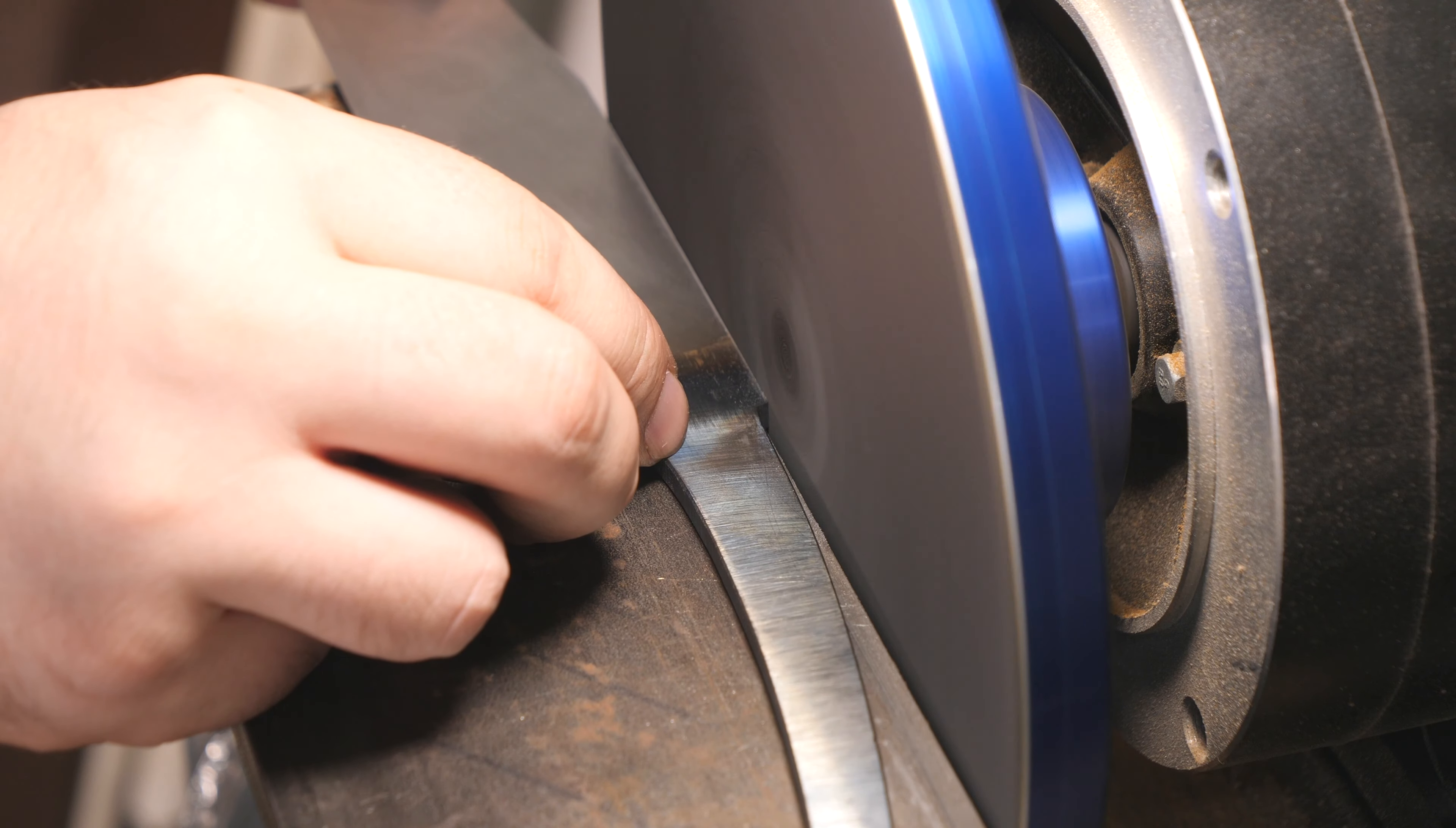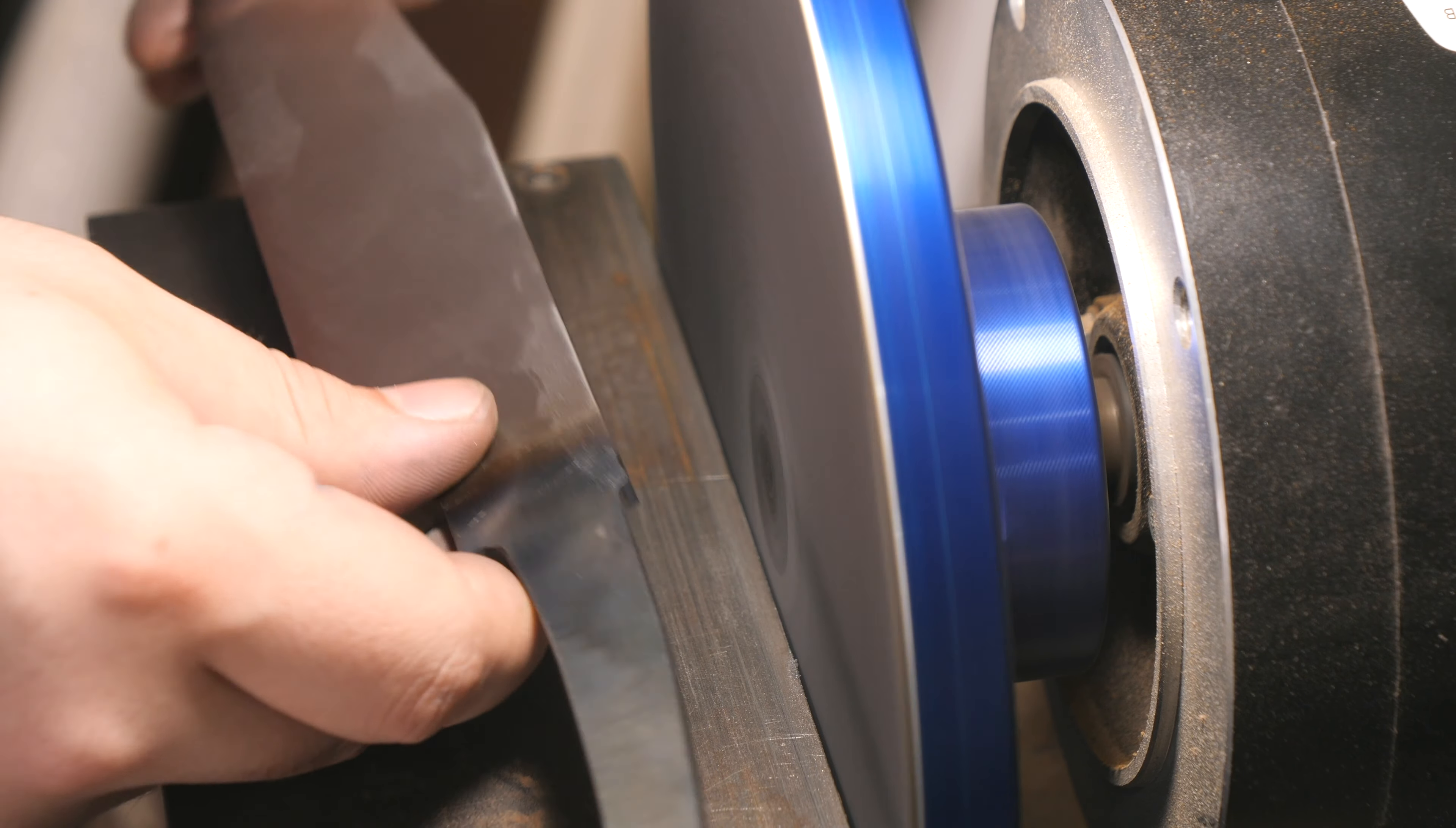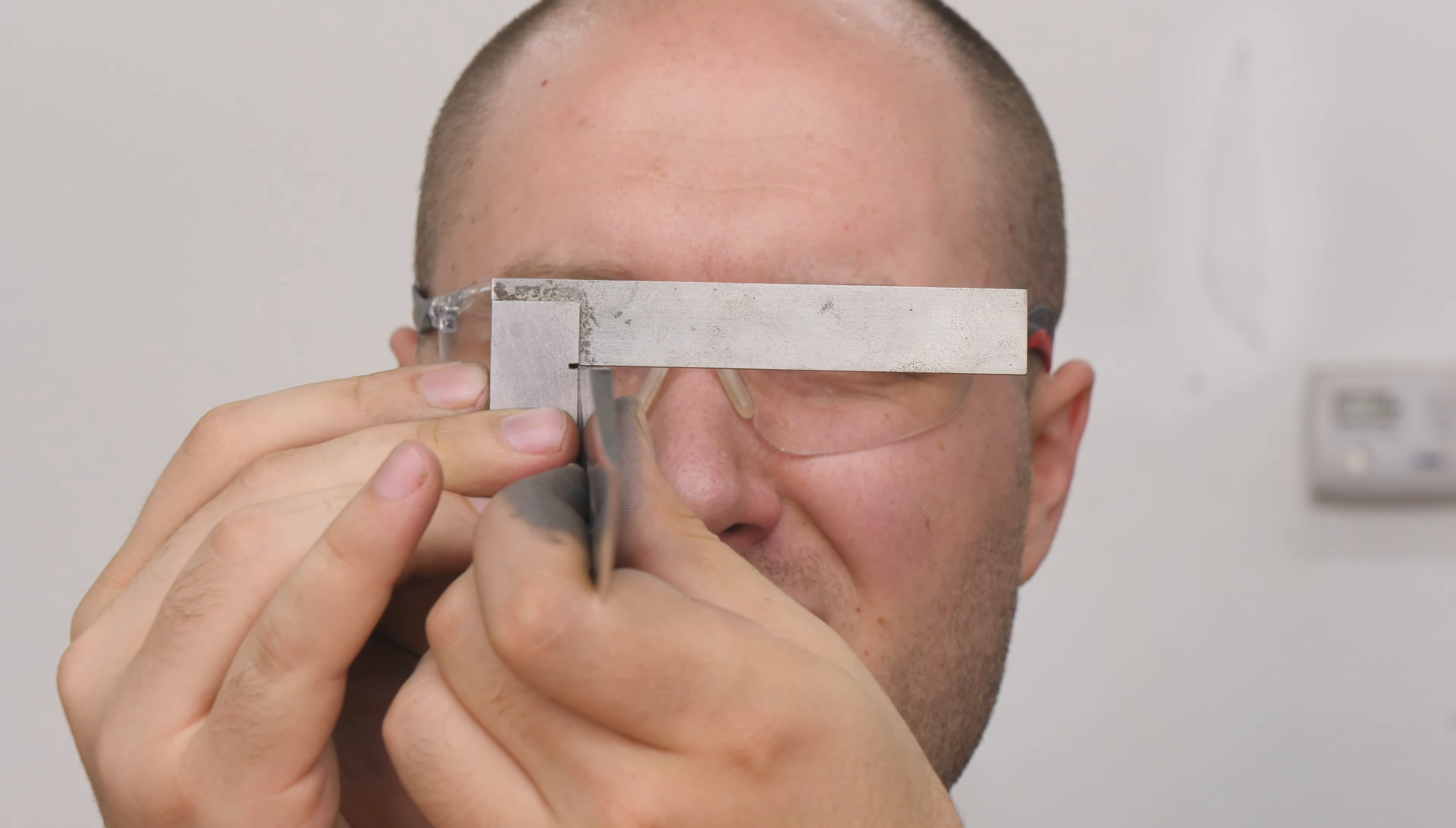I need to clean up the spine of the blade next. I want to make sure it's nice and square with the blade so I'm holding the square on the ricasso. Turns out it wasn't so I need to adjust the disc sander a little bit. I put the black mark on there so you could really see where the disc sander is hitting and make sure that I'm getting it square. Now it's square after a little adjustment on the disc sander.